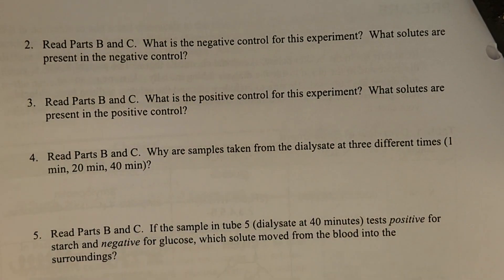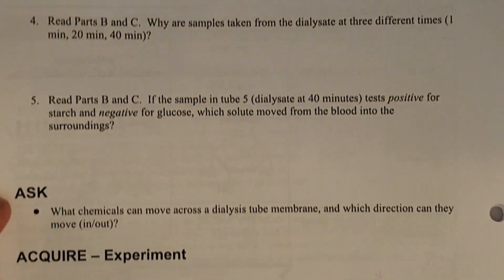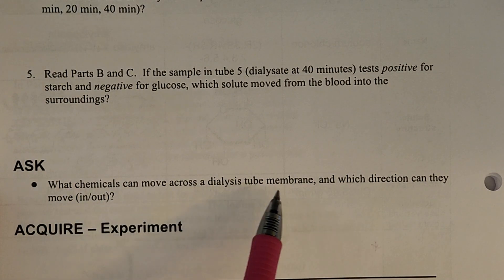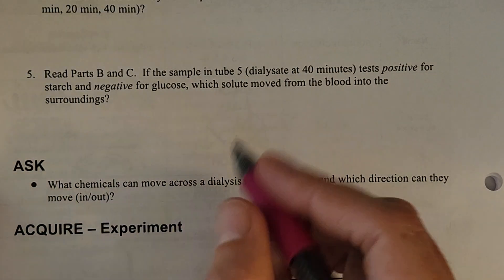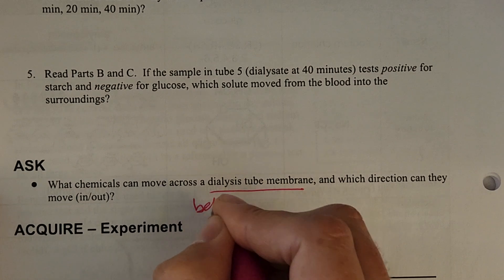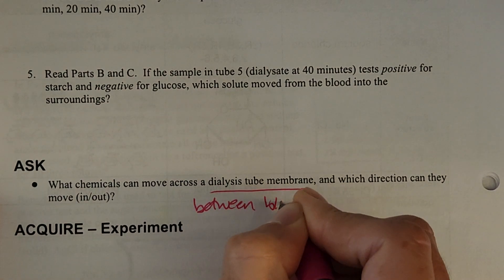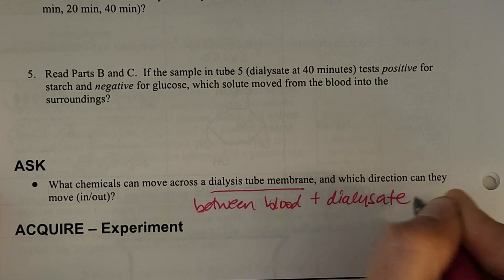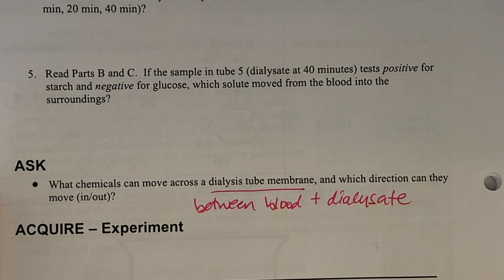So moving on, you have more prepare questions here. Make sure those are all done before you come to class. And our big question of the week is what chemicals can move across a dialysis tube membrane? And so that would be between the blood and the dialysate. And which direction can they move? Can they move in? Can they move out? Look for evidence of either of those or both, okay?